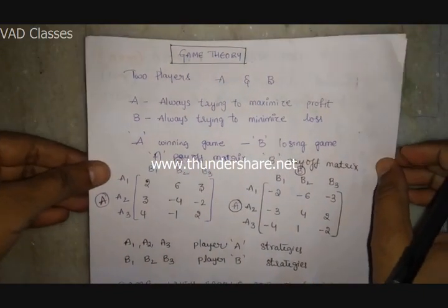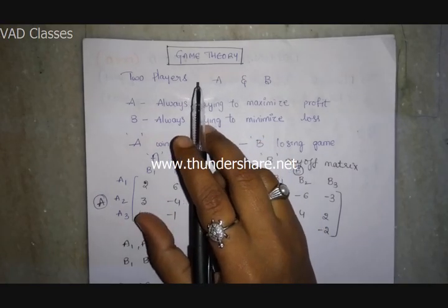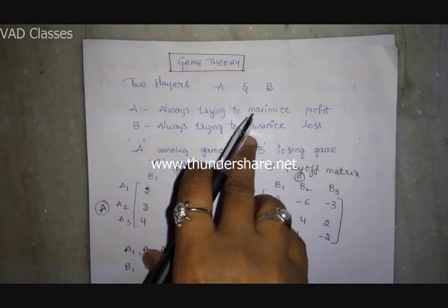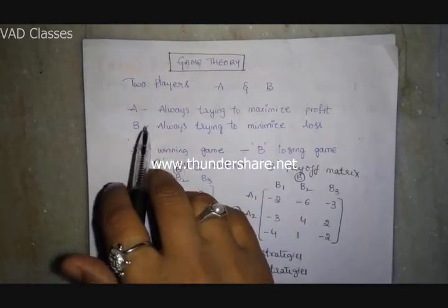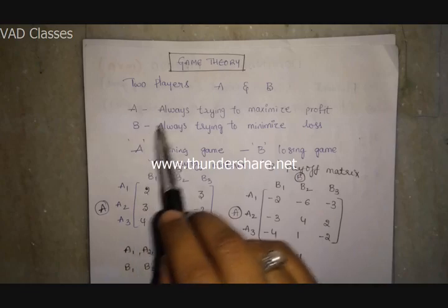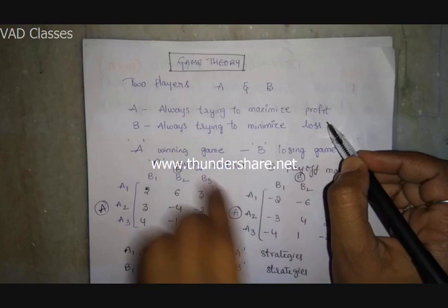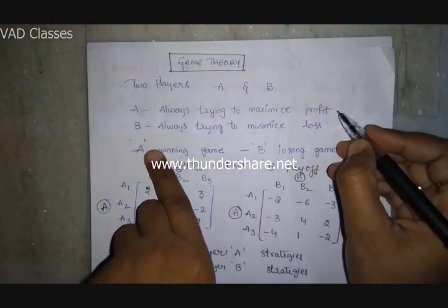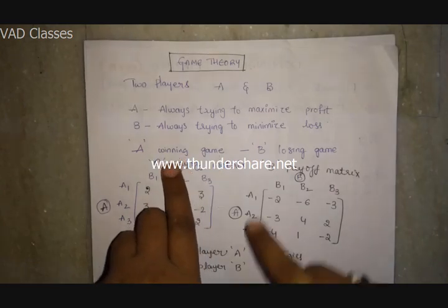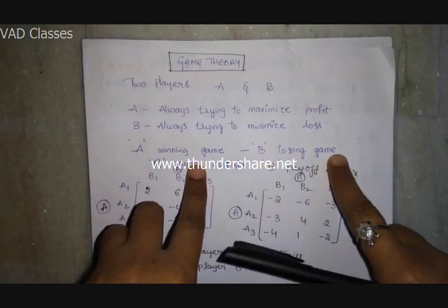In this video we are going to discuss game theory. In a competitive game there should always be two persons. Player A is always trying to maximize his profit, and as a result, the second person automatically faces a loss. So player A is always winning the game and player B is always losing.